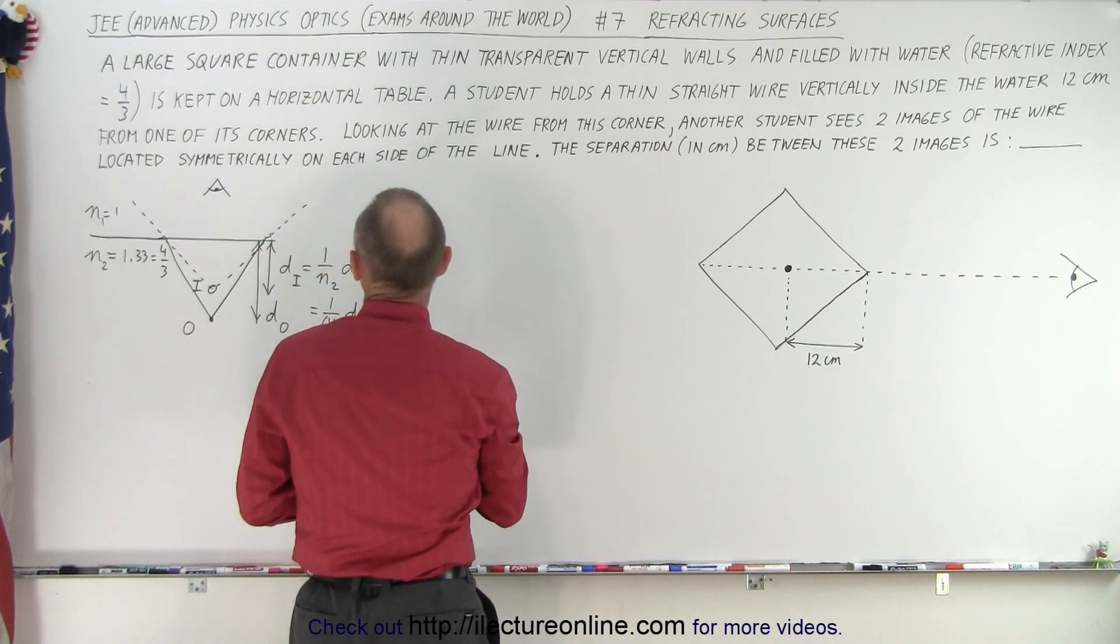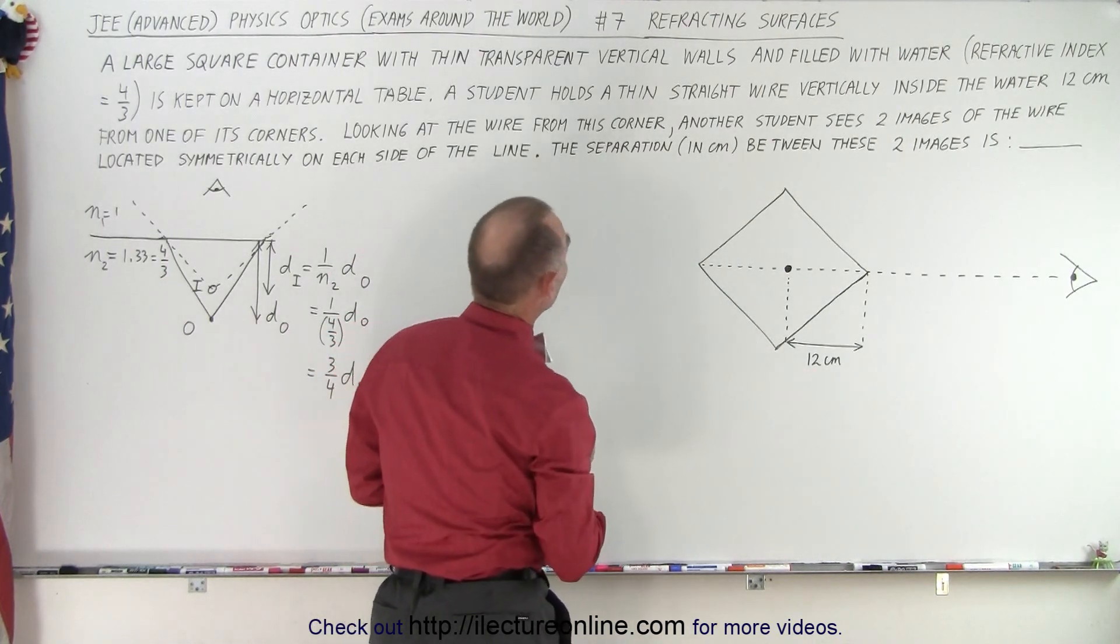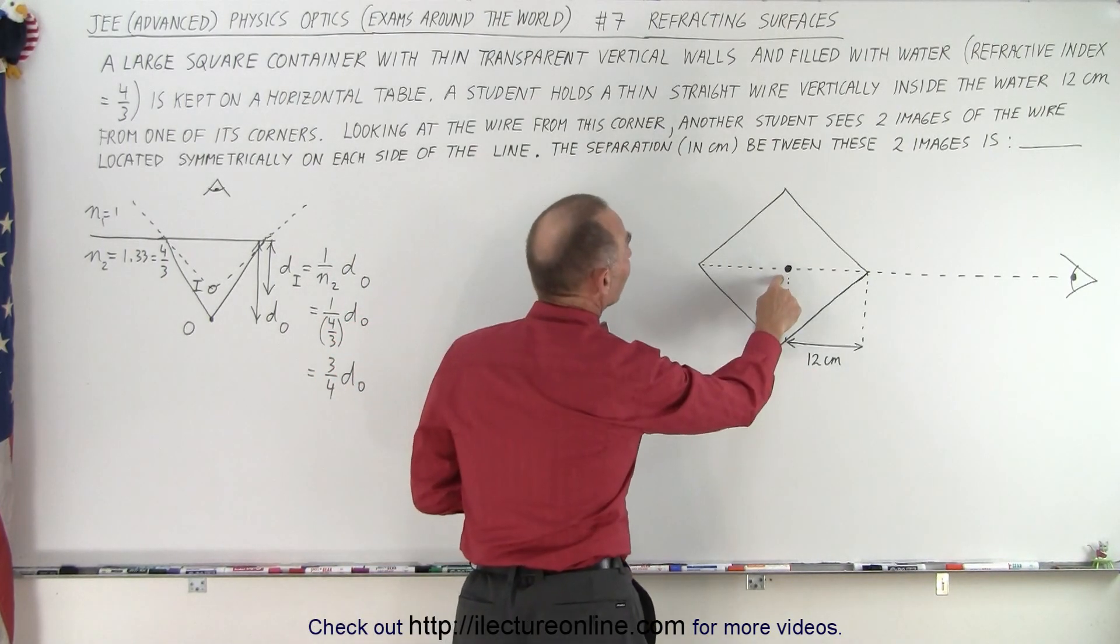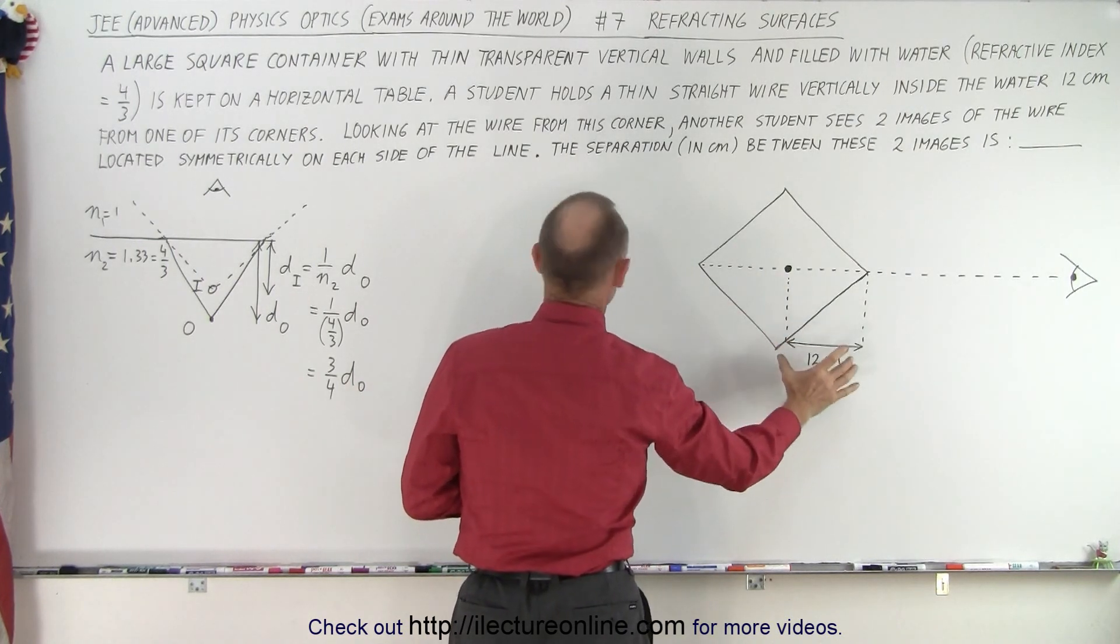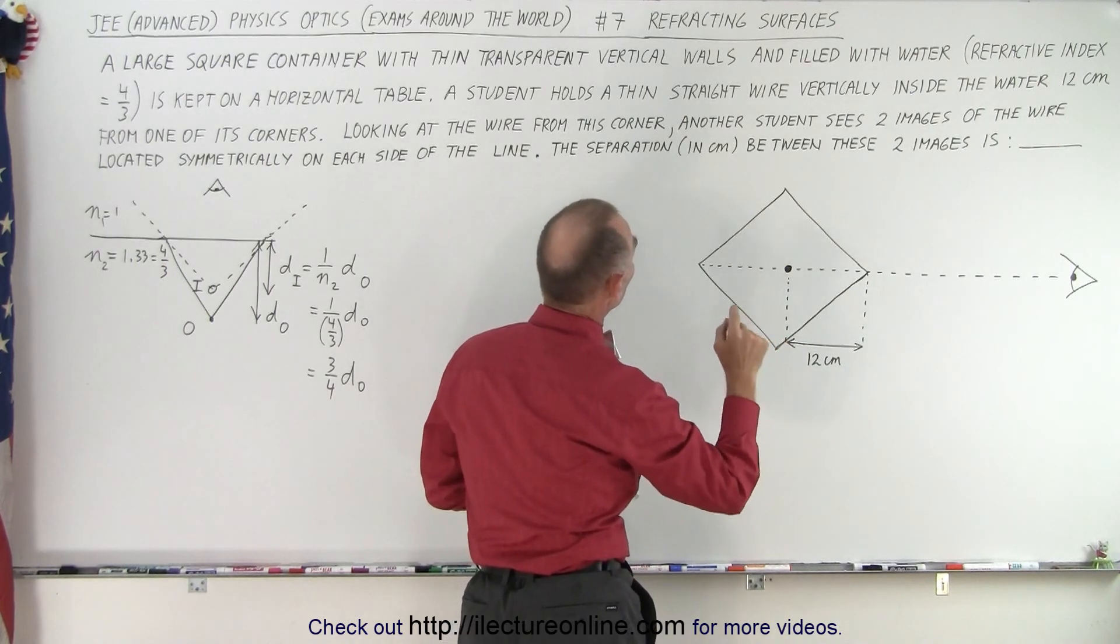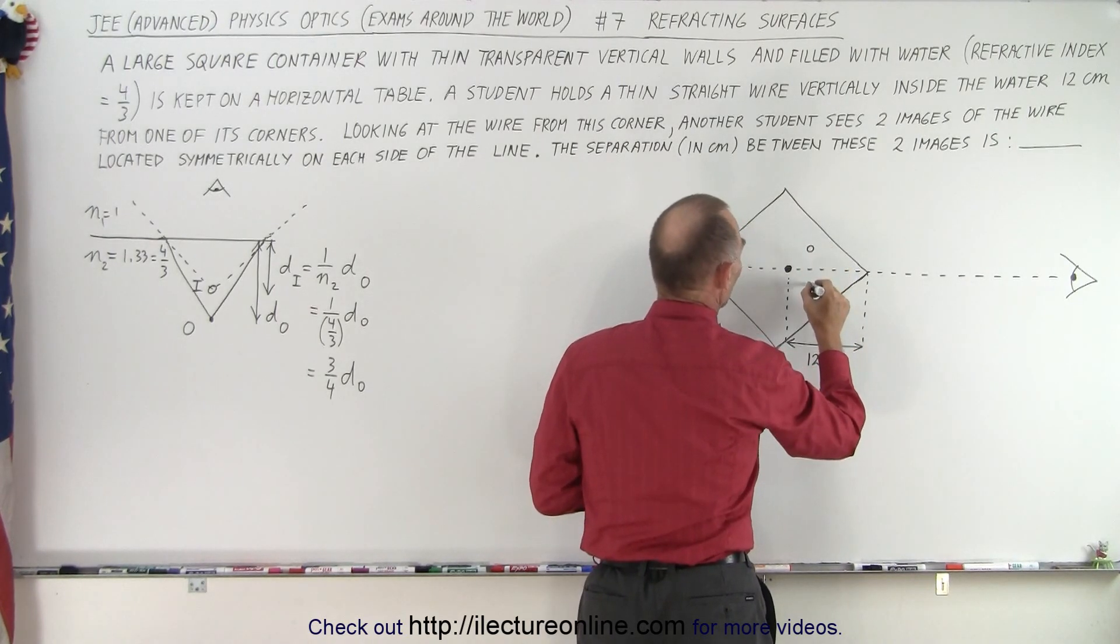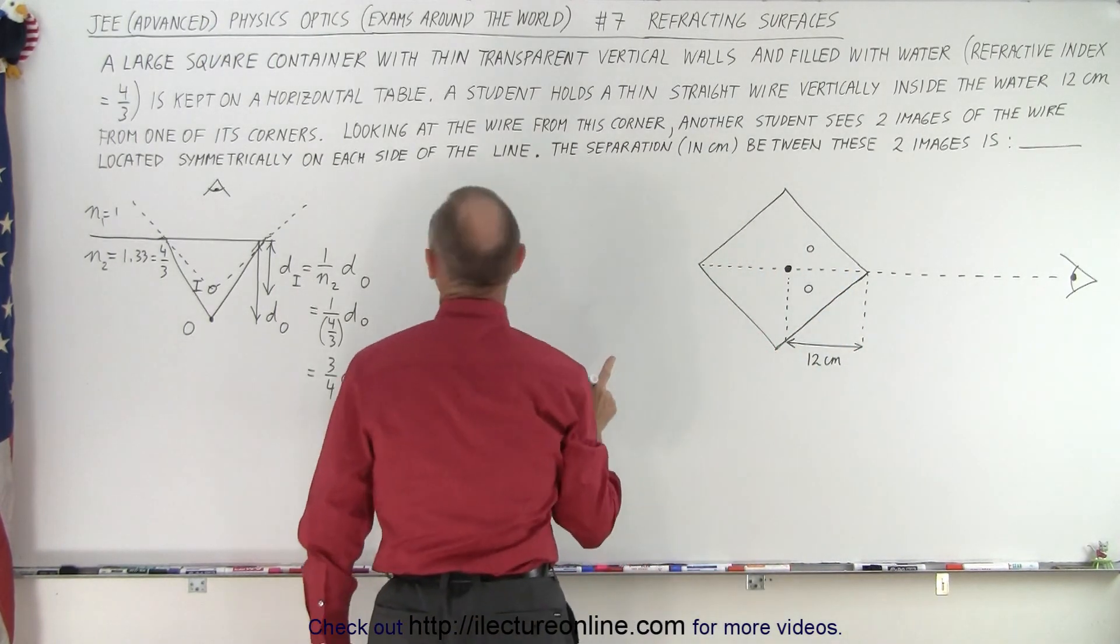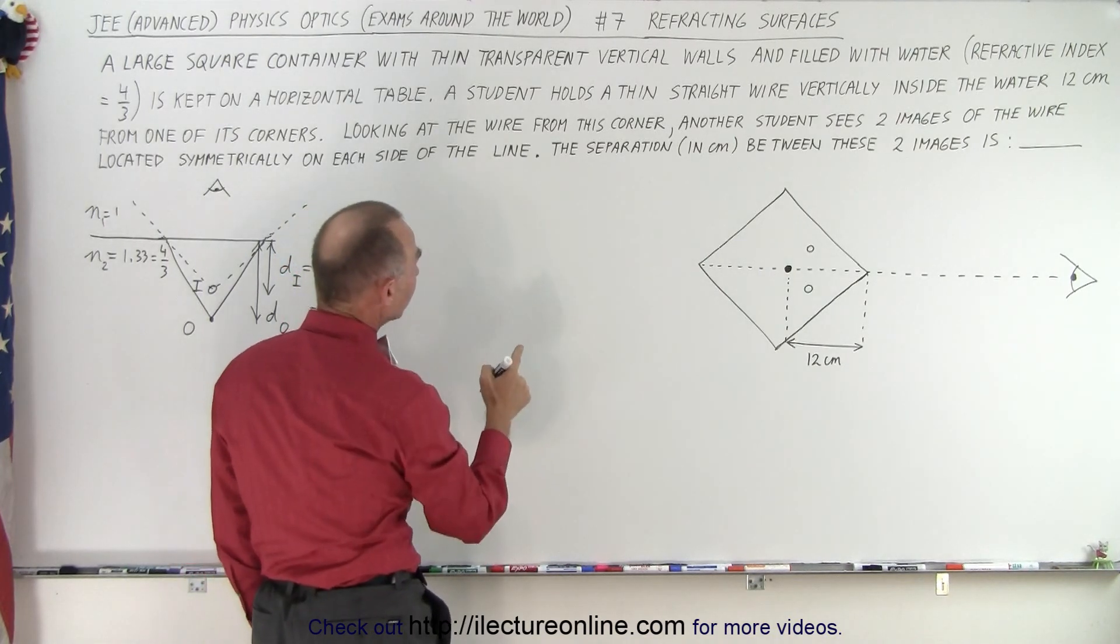It's kept on a horizontal table. A student holds a thin straight wire vertically inside the water, 12 centimeters from one of its corners. Looking at the wire from this corner, another student sees two images of the wire located symmetrically on each side of the line.